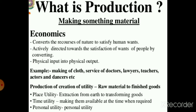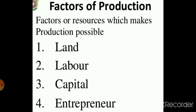Factors of production are resources which make production possible. Production of a commodity or service requires the use of certain resources or factors of production. Since most resources necessary to carry on production are scarce relative to demand, they are called economic resources. These factors — land, labor, capital, and entrepreneur — are combined in various ways by firms to produce an annual flow of goods and services.